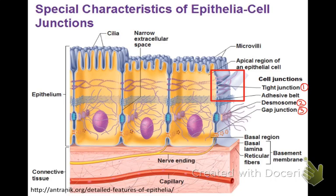The first type is a tight junction. Tight junctions go all the way around the cell, fusing them to the cells around them. This creates a seal so that substances must go through the cells and not the extracellular space. You can see this in the intestines — you want those nutrients to have to go into the cell, not around the cells. You see a lot of these in intestinal cells, and that just keeps digestion separate from the rest of the body.